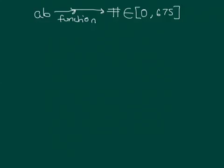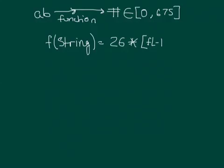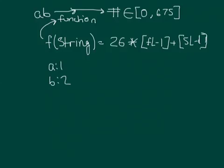Let's say we have the word AB. AB is applied to some function that maps the two-letter word into some sort of integer that's within the range 0 to 675. And let's just say that this function is f of some string, which is two characters long. It would be 26, meaning the number of characters in the English language, times the first letter minus 1, plus the second letter minus 1. When I say letter minus 1, what I mean is a corresponds to 1, b corresponds to 2, c corresponds to 3, so on and so forth.